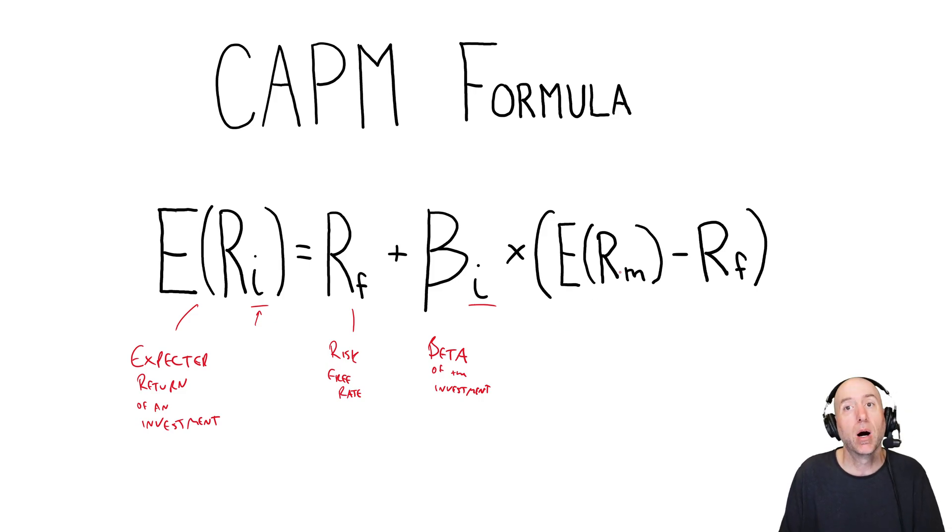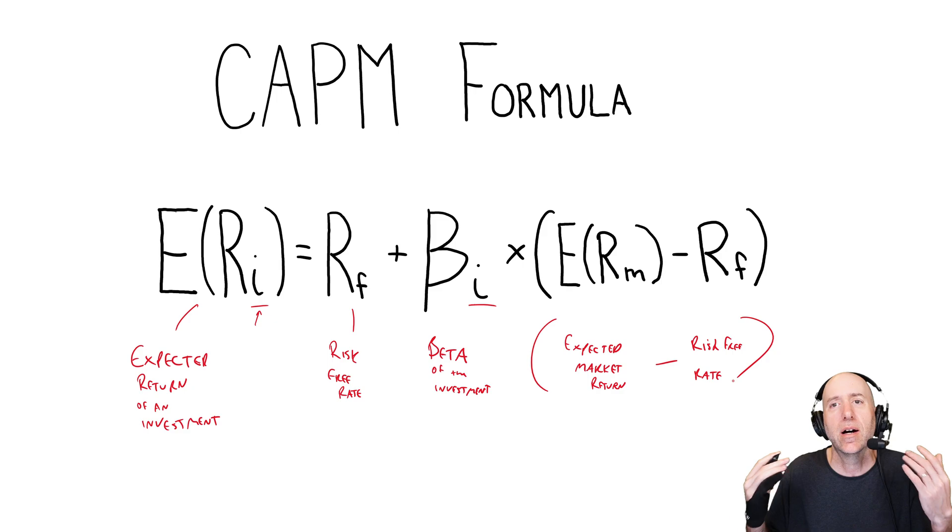So, times the expected market return. So, again, sort of an average market return. Now, this, what's in brackets, actually has a phrase. So the expected market return, let's just say we expect the market to return 10%. I'm talking round numbers. The market return is 10% on average. The average company listed in this index or whatever in this stock market. But we would expect to see the total market be 10%. And our risk-free rate, the US T-bill rate, let's just say it's 4%.